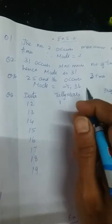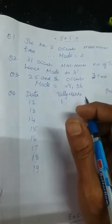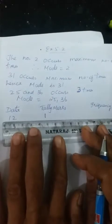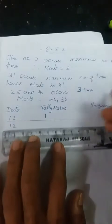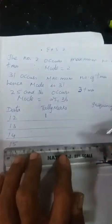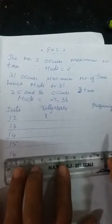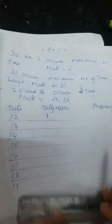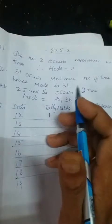The first number is 12, so you put one line over here for 12. Next number is 14, put a line over here. For the tally marks, 1, 2, 3, 4 and the fifth one you put a cross. That is how you put the tally marks.